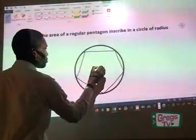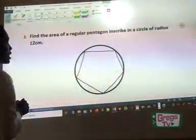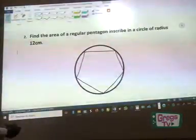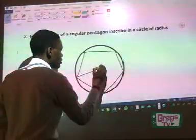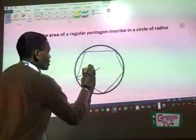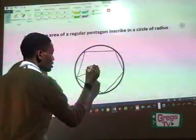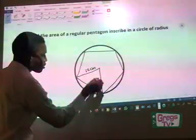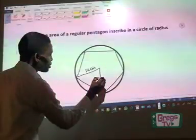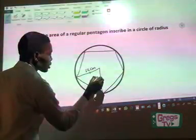Now, this is the center of a circle because we are told that the circle has a radius 12 centimeters. So that will be from any point on the circumference to that point will be 12 centimeters, of course, representing radius. Any point on the circumference to that same point is also the radius. So if this is 12, this is also 12.